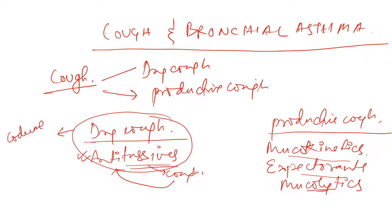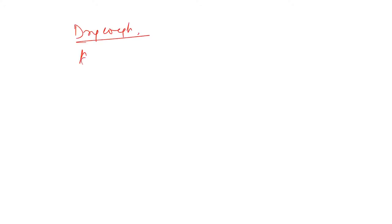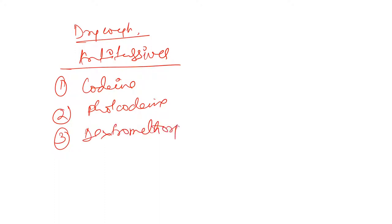The anti-tussives used for dry cough are: number one, codeine; number two, pholcodine; number three, dextromethorphan; and number four, noscapine.